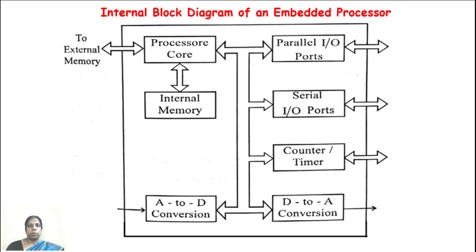The on-board bus communicates between the microcontroller, computer device, and units such as EEPROM, memory card, LCD display, and so on, all on the embedded board. The SPI and I2C buses are common examples of on-board buses.